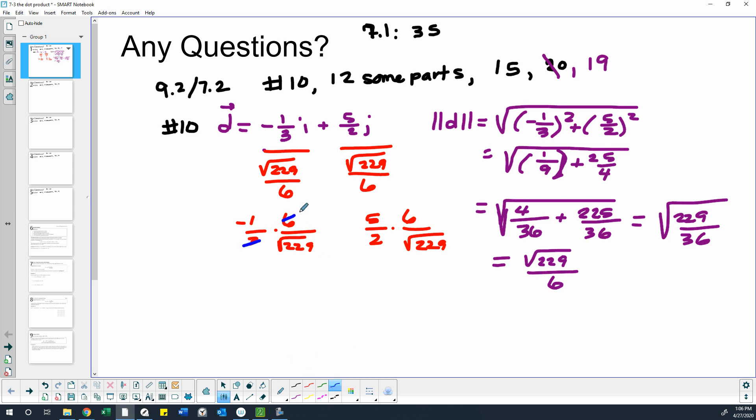3 goes into 6 twice, so that gives us negative 2 over square root of 229. I'm not going to worry about rationalizing it, feel free if you'd like to. And then this one, the 2 goes into the 6 three times, so that would be 15 over square root of 229.